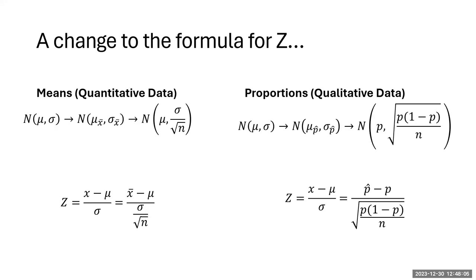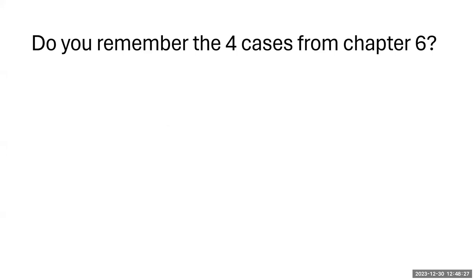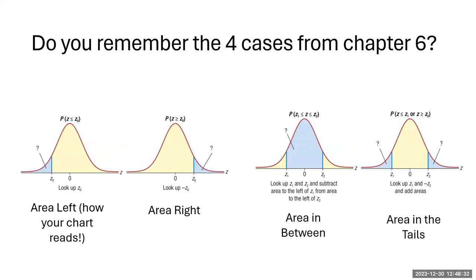On this screen is a side-by-side comparison of the formulas for means and proportions — all found on your formula sheet. You must first decide whether a problem deals with means or proportions, as that dictates which z-score formula to use. The four cases from chapter 6 — area to the left, to the right, in between, and in the tails — are all fair game here in chapter 7. If you need a refresher, go back to the chapter 6 video.